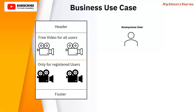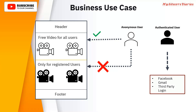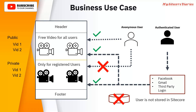So on your system, you have two kinds of users: anonymous users and authenticated users. Anonymous users can access the free videos for all users, whereas they cannot access the videos which are for registered users. Authenticated users will get authenticated via Facebook, Gmail, or a third-party login. When authenticated, users will have access to both the free video and the registered video. These authenticating users are not stored in the Sitecore security database. You have created your tree where you have public videos separated and private videos separated — this is the requirement where you have to manage the permissions on your website.